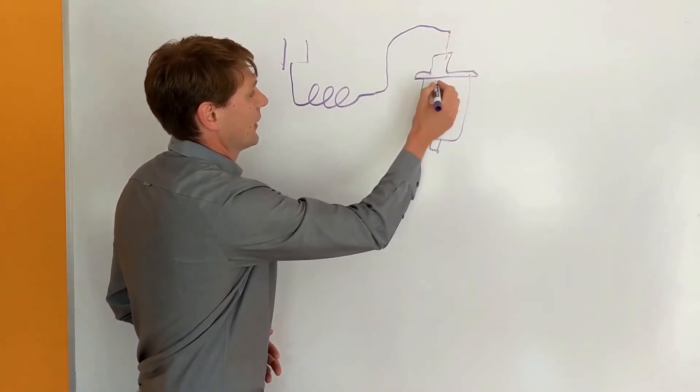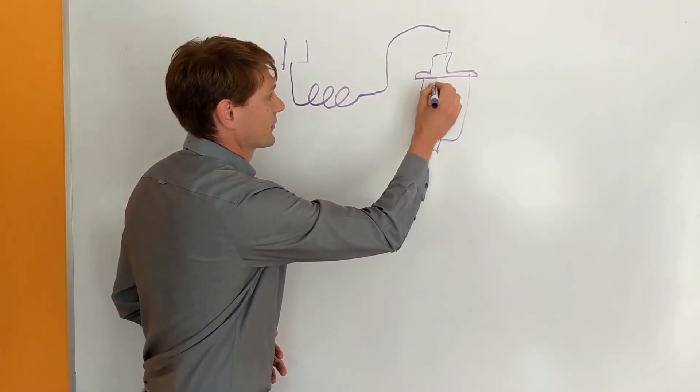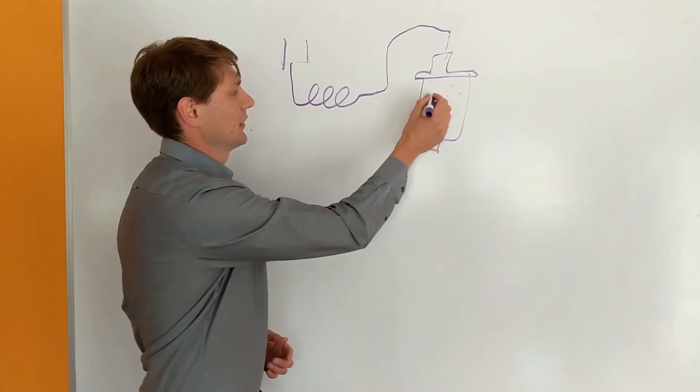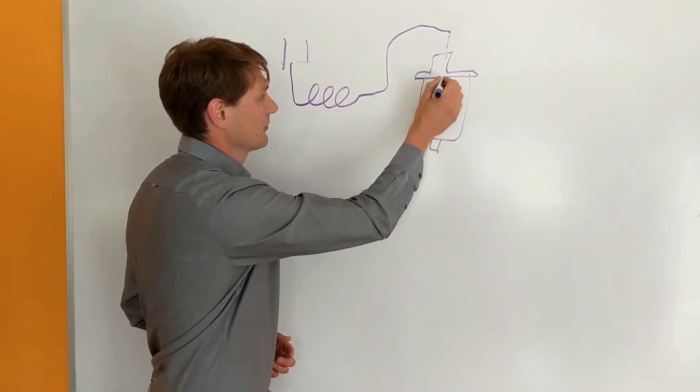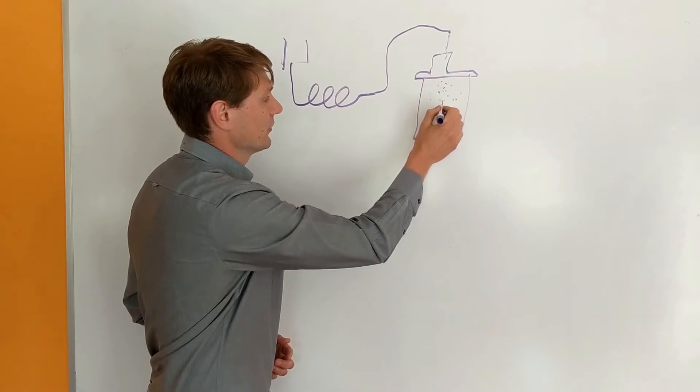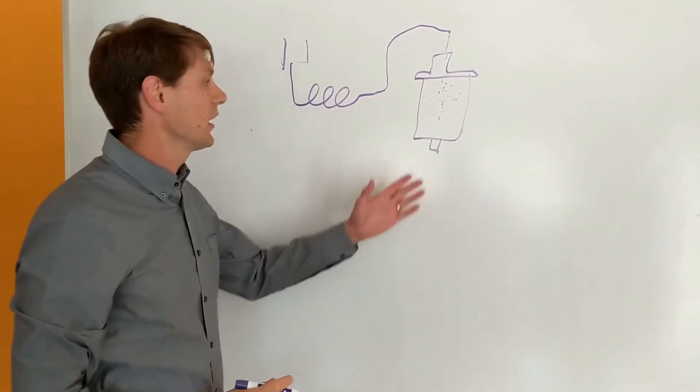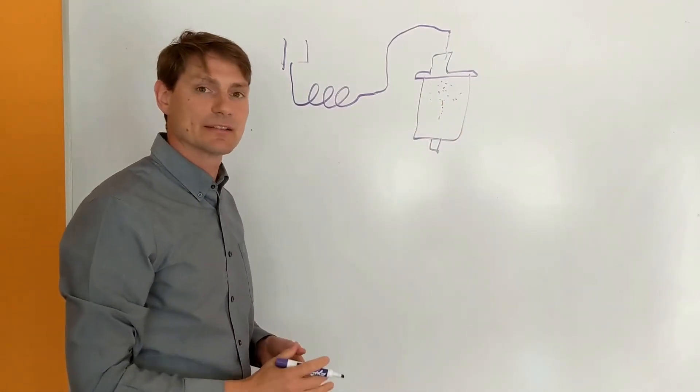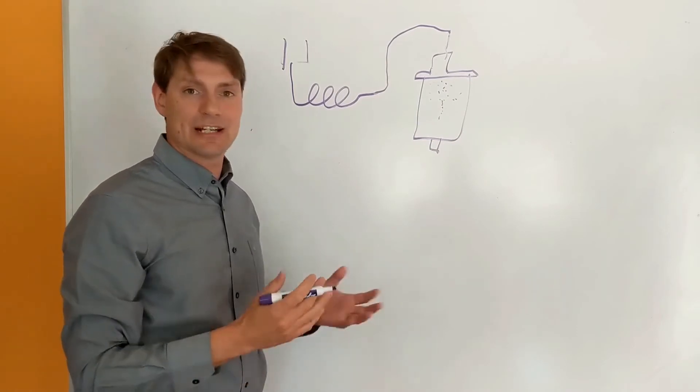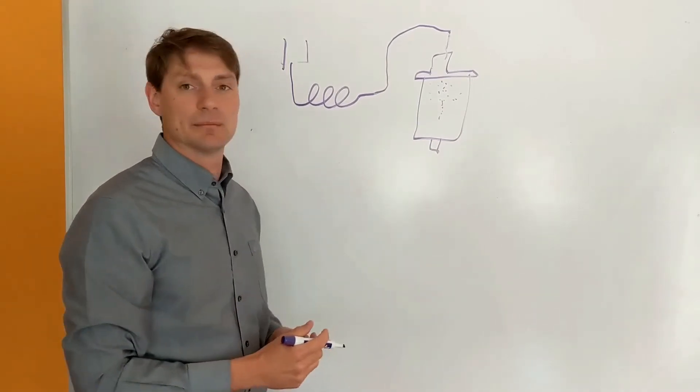As the sample comes through here, it interacts with material in here called reverse phase chromatography material, and as the sample comes through, it slowly interacts with this column material. And what ends up happening is the different cannabinoids have an affinity to the column that differs.